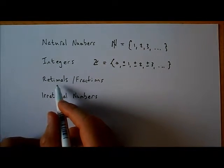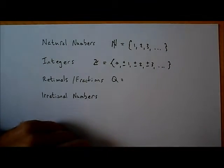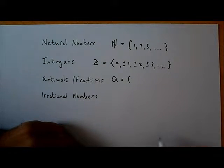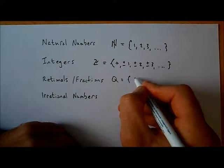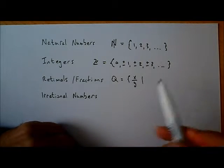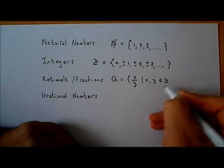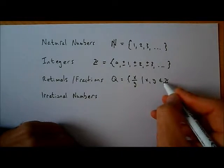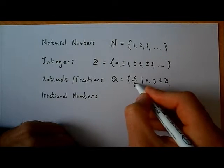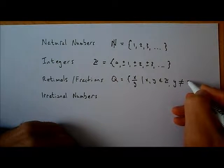We've got the rational numbers, or fractions, and they're given the symbol Q. Fractions look like this: we have x over y. A fraction is always something over something. x and y both have to be integers — x, y are elements of Z — but the denominator y cannot be equal to zero.